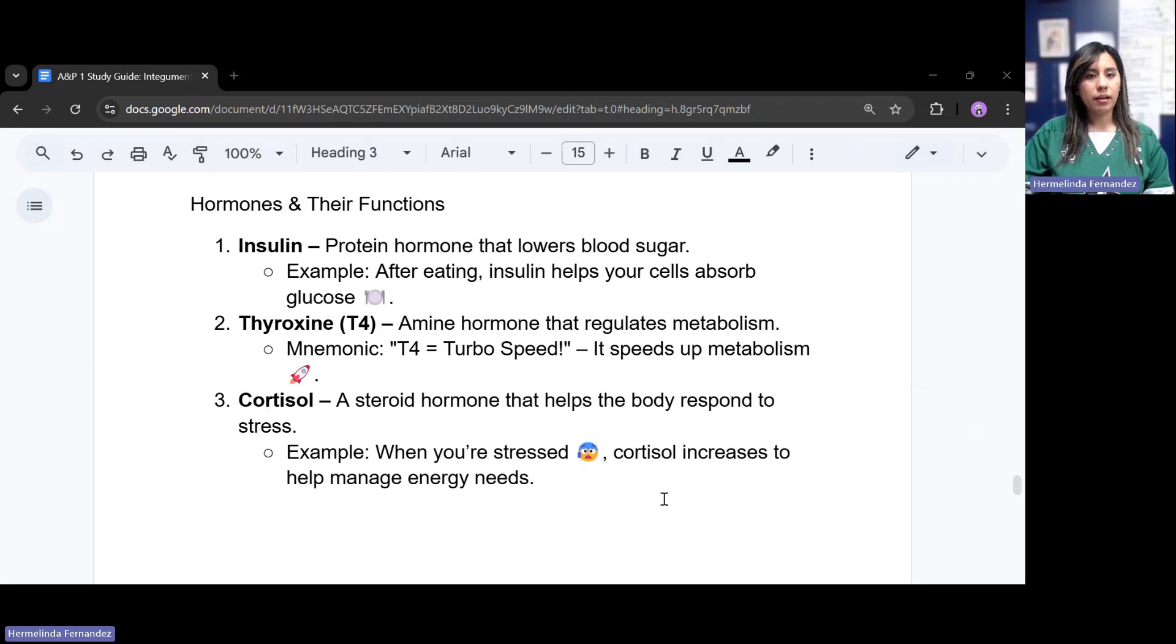Endocrine system. We have insulin. Insulin is a protein hormone that lowers that blood sugar. After eating, insulin is what helps our cells absorb that glucose. The glucose, again, is sugar. Glucose, or that sugar, then turns into energy.